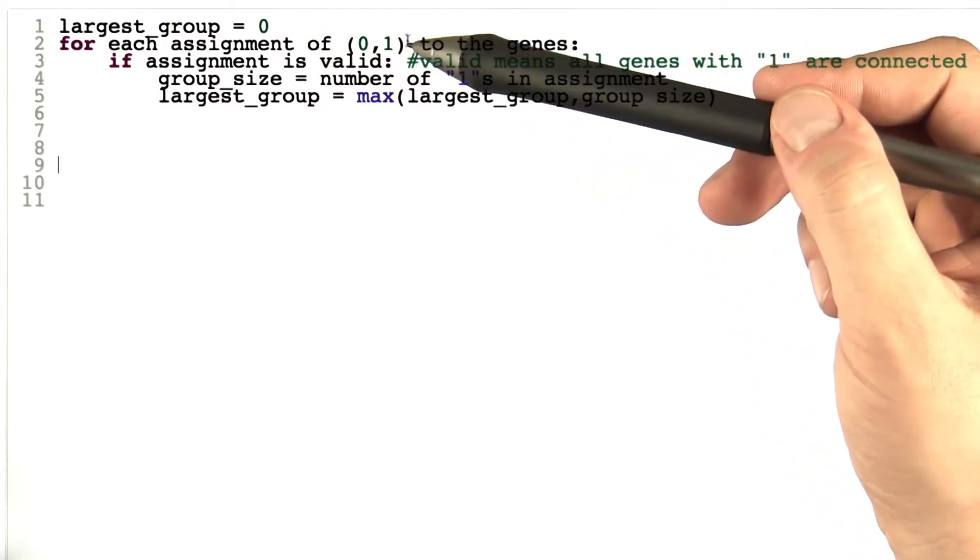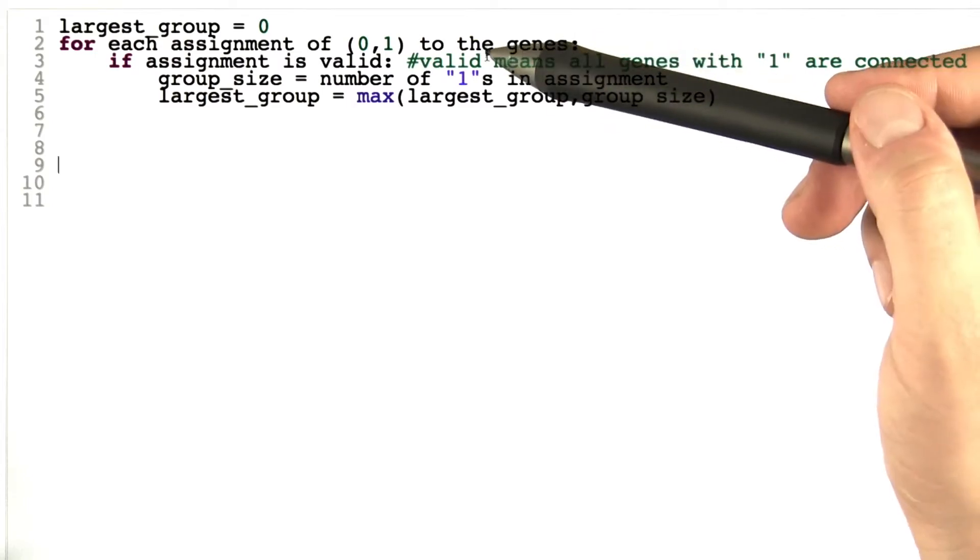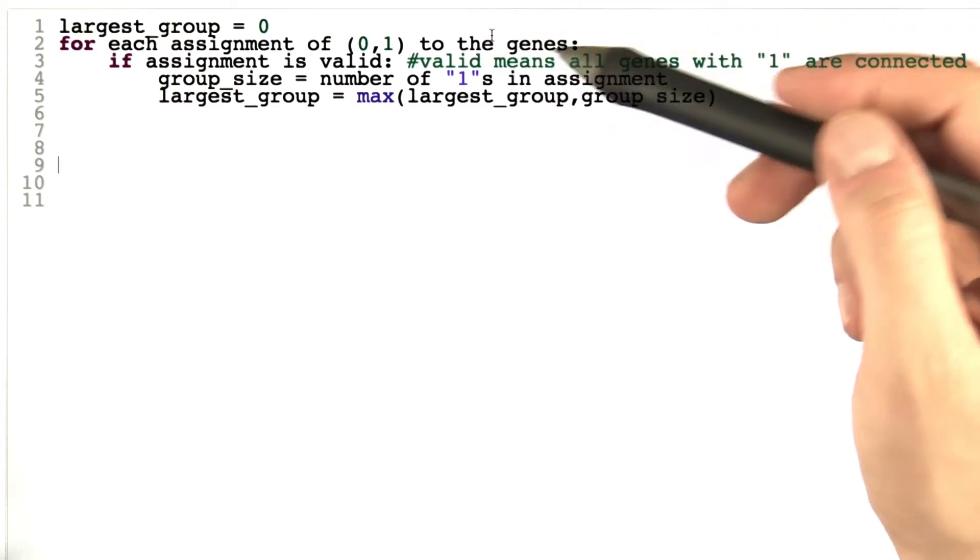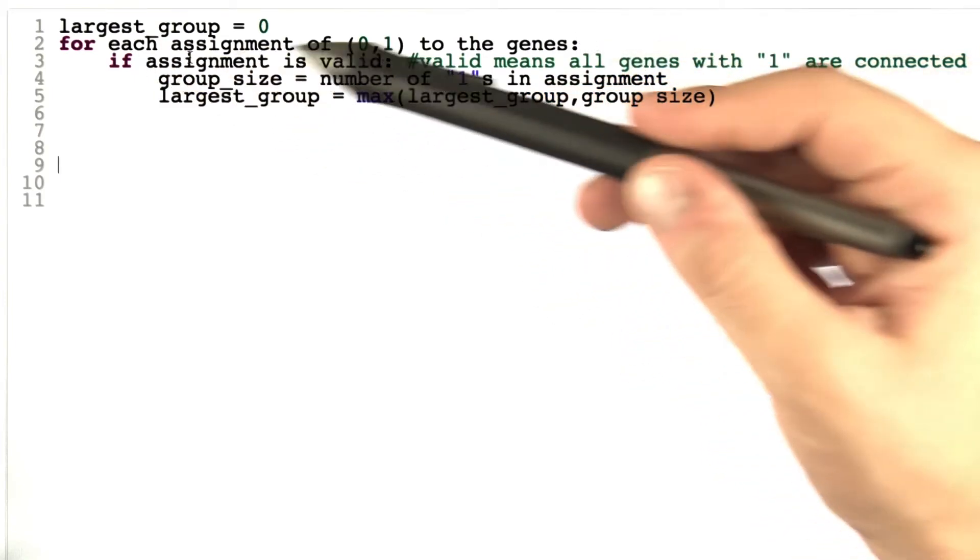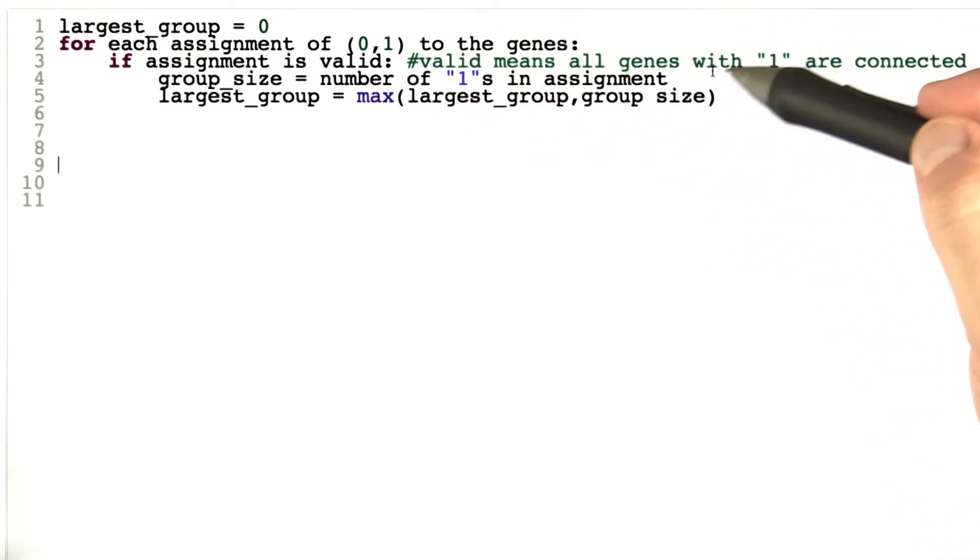And then again, we can try all assignments of the values 0 and 1 to the genes. A 1 meaning that we're considering this gene to be part of this large cluster of genes that are all connected to each other. And an assignment of 0 and 1 to the genes is valid if all genes that have been assigned a 1 are connected to each other.